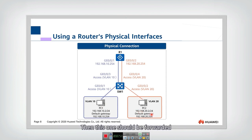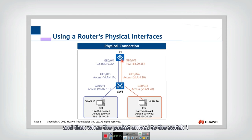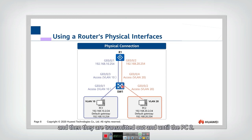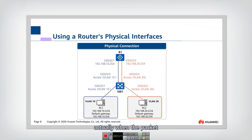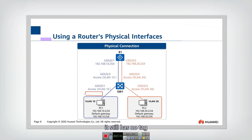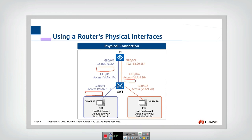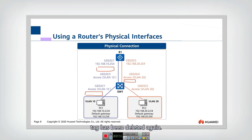The router determines the packet should be forwarded from interface 2, so the packet is transmitted there. When the packet arrives at switch 1, it identifies it is for VLAN 20 and transmits it to PC2. Regarding tags: the packet from the PC has no tag. When it enters the switch, a tag is added. When it exits the access interface, the tag is removed again. The packet travels through the cable into switch 1 with no tag, gets tagged internally, and the tag is deleted again on exit.